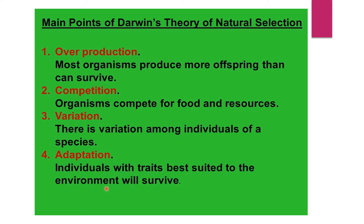The main points of Darwin's theory of natural selection: the first one is overproduction — most organisms produce more offspring than can survive. The second one is competition — organisms compete for food and resources.